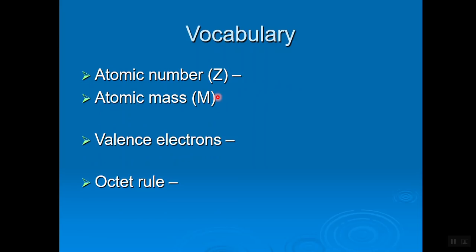Then we have the octet rule. OC is a prefix which means eight, like an octopus has eight limbs, eight tentacles. What the octet rule states is that an atom is happiest, or most stable, when it has eight valence electrons. That's what the octet rule says. An atom is happiest or most stable when it has eight valence electrons.